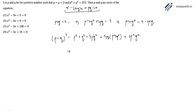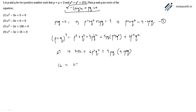We can write p raised to the power 4 plus q raised to the power 4 as 272, and (p plus q) raised to the power 4 equals 16. So 16 equals 272 plus 6 times p squared q squared plus 16pq minus 8p squared q squared.